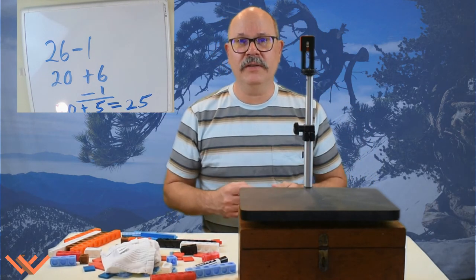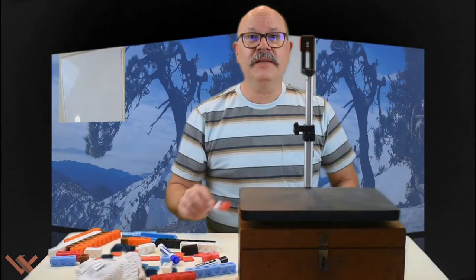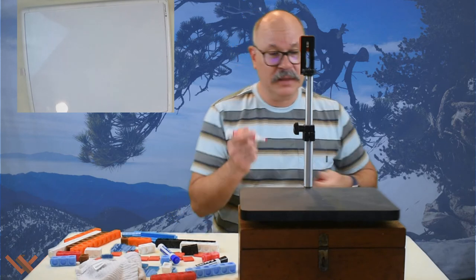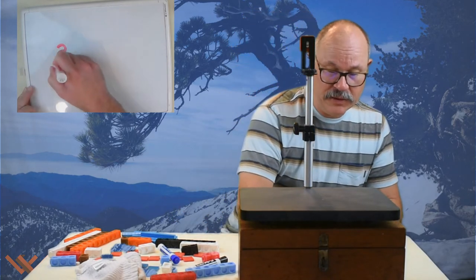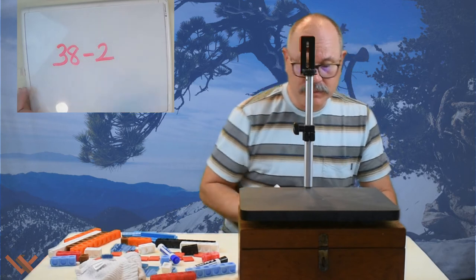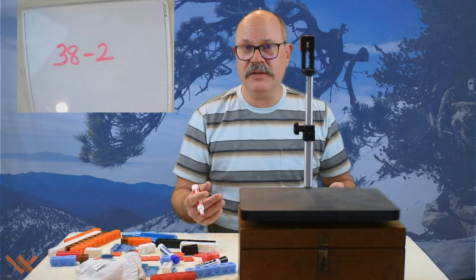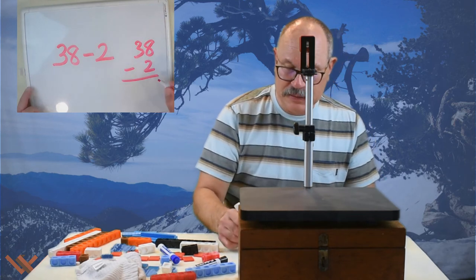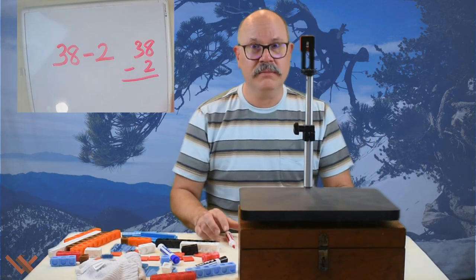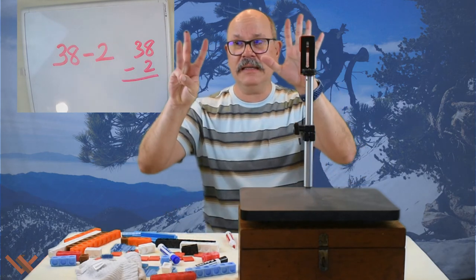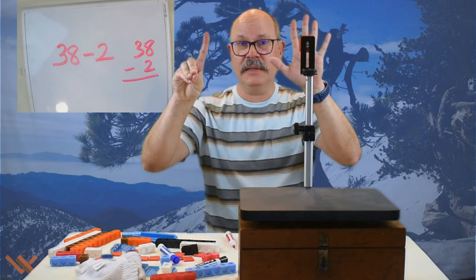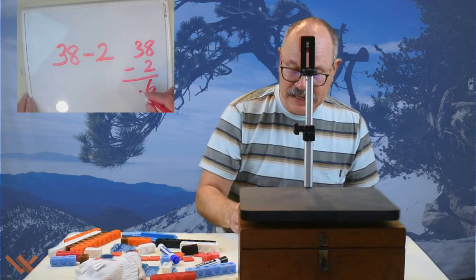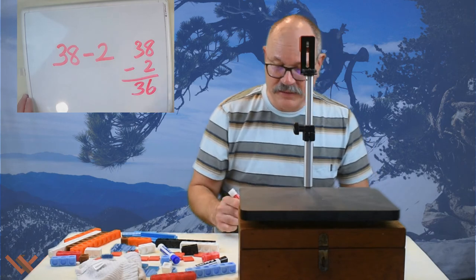There are so many different ways to deconstruct and construct numbers. Let's take a look at a larger number where we're going to subtract two. I start out with 38 minus two. We can do the standard algorithm: 38 minus two. So eight minus two — use your fingers if you need to — eight minus two is six. We have six. I'm going to bring down that ten, which is three tens, and we have 36.